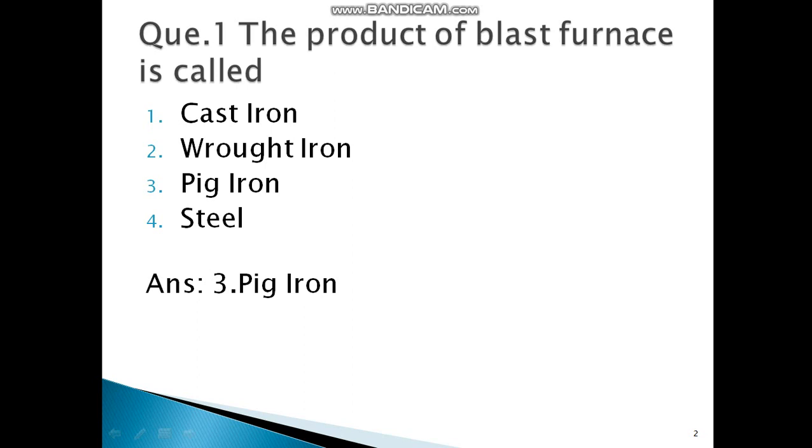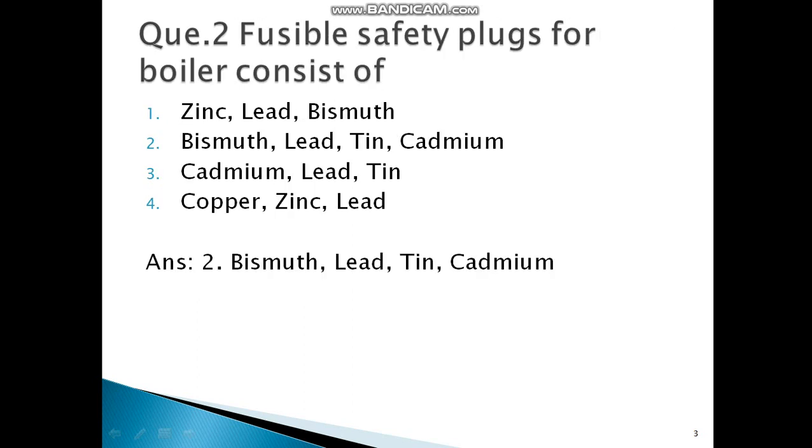And the correct answer for this is pig iron. If you are going to see the options, cast iron is obtained from the cupola furnace, wrought iron is the purest form of iron, pig iron is the correct option, and steel is not the correct option. Hence the correct option is option 3, pig iron.